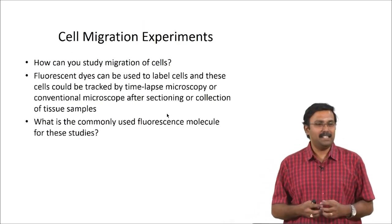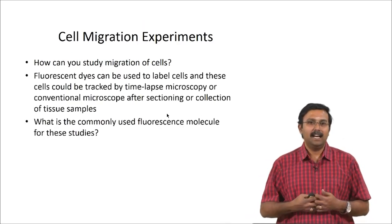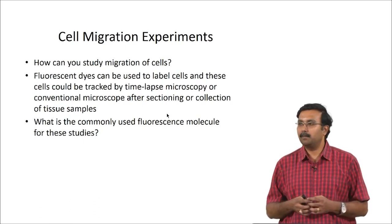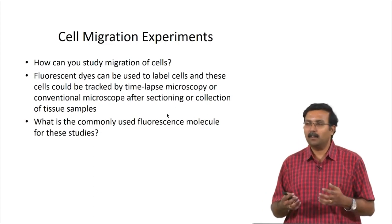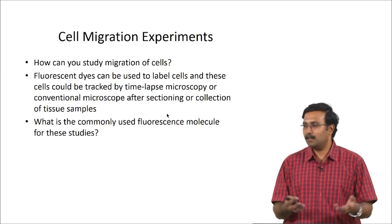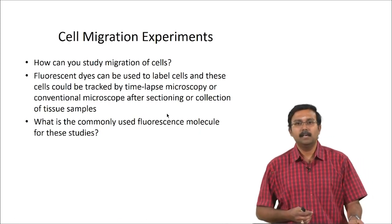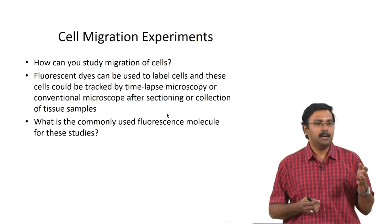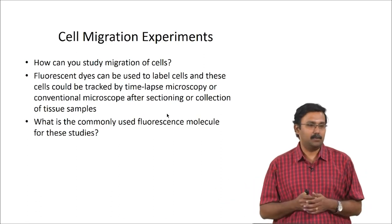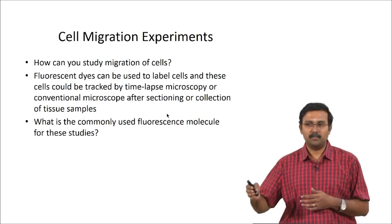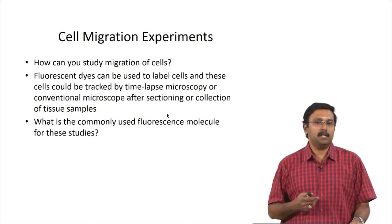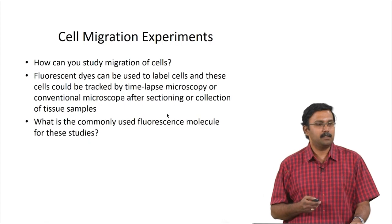What you basically do is fluorescently label the cells and track them using time-lapse microscopy or conventional microscopy. Confocal can be used but is usually more complicated — if you tag cells with fluorescence you can use simple microscopy techniques. You will see where the cells you seeded are and how far they have gone. You can use sectioning to see how far the cells have moved. A commonly used fluorescent molecule for these studies is GFP.